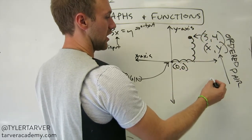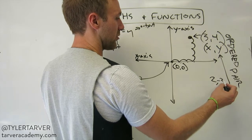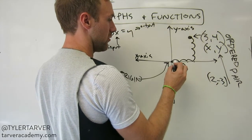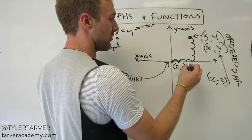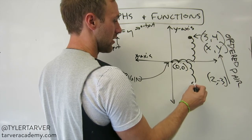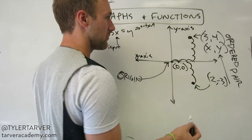For instance, say you've got 2, negative 3. I'd go over 2. 1, 2. And then I'd go down 3. 1, 2, 3. And that's where this one is. So that's an ordered pair.